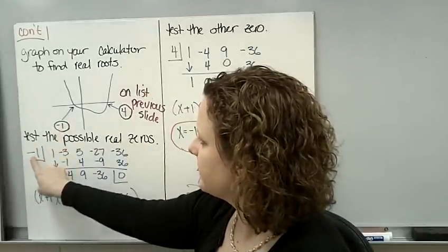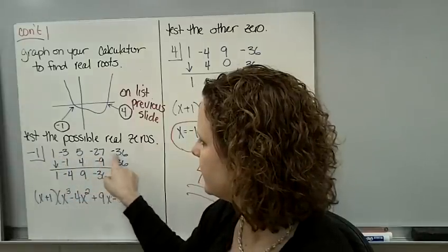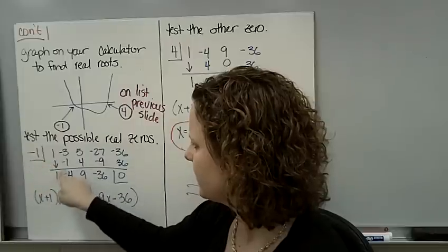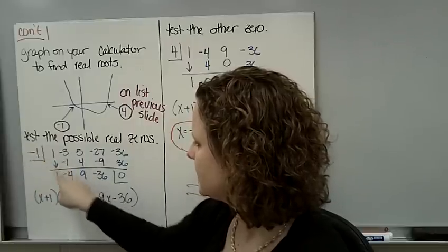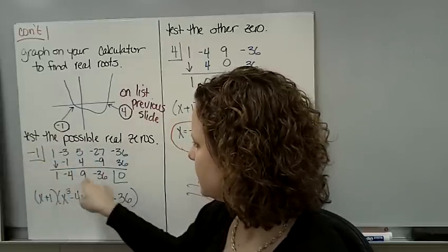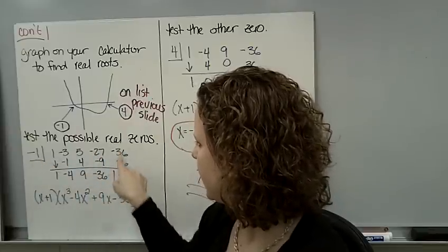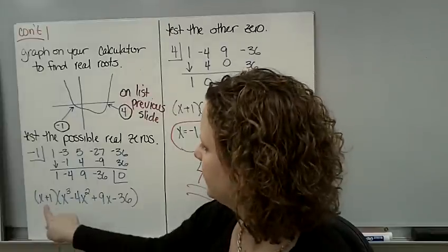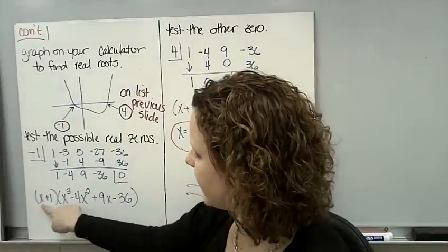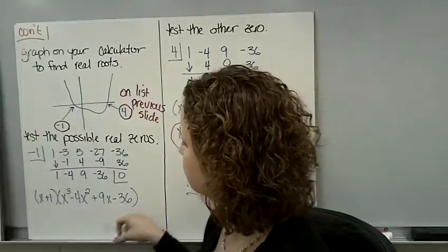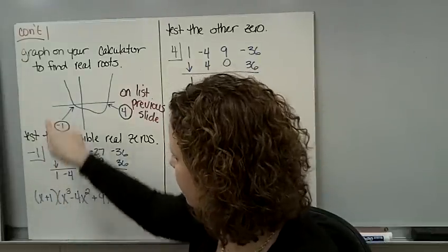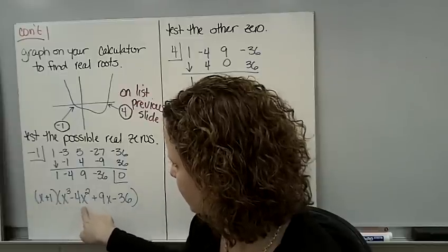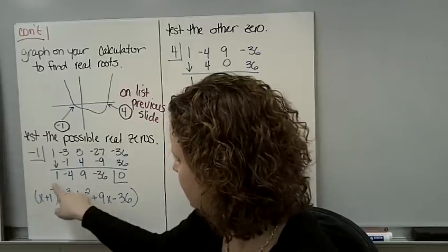I'm going to start out with -1. These are the coefficients in front of the variables. Do your synthetic division. -1, add, multiply, add, multiply, add, multiply, add. I got a remainder of 0. That means that it's one of the roots. So I factored out an x + 1, and there is the remaining polynomial. If I start out with an x to the 4th, I factor an x out. I'm left with x³ - 4x² + 9x - 36. Those are the coefficients.